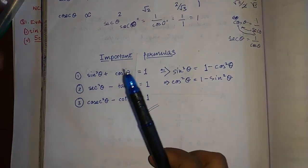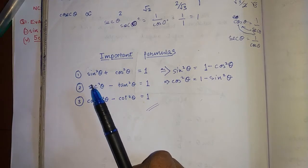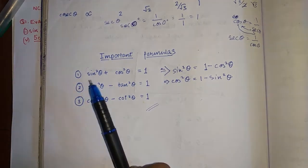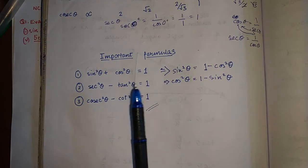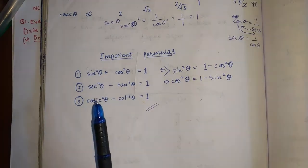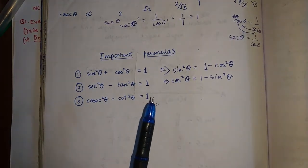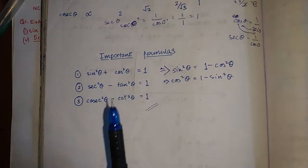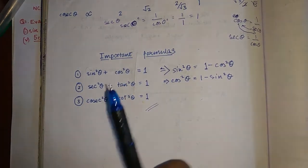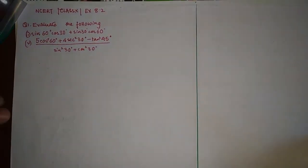I also want to introduce these important formulas that you'll be applying in some of the questions today: sin²θ + cos²θ = 1, sec²θ − tan²θ = 1, and cosec²θ − cot²θ = 1. I'll teach you the proofs in another class — for now, just learn the formulas.